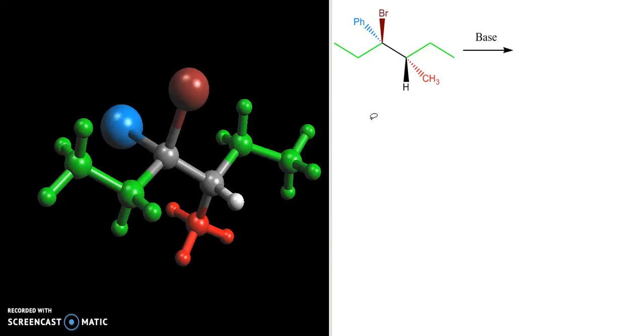Let's look at an E2 reaction on a molecule like this where we have a bromine and a hydrogen on adjacent carbons and we have a base that can remove this hydrogen.